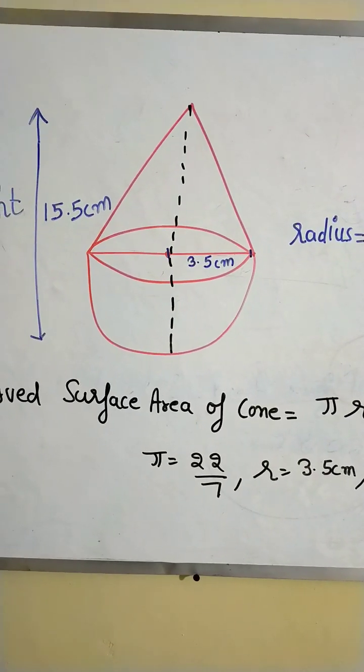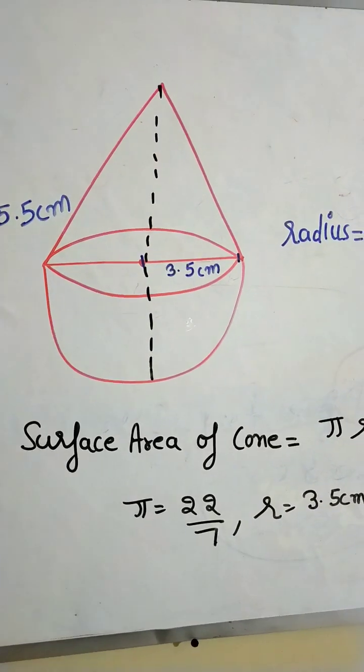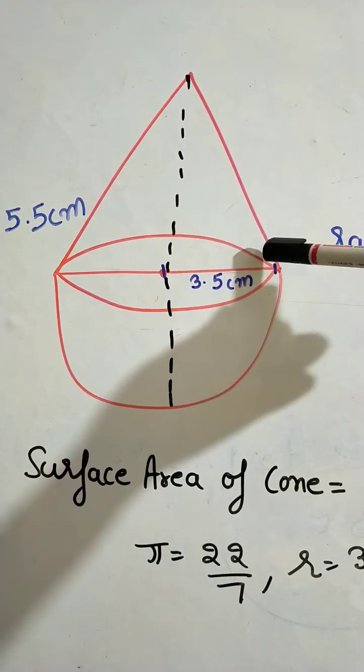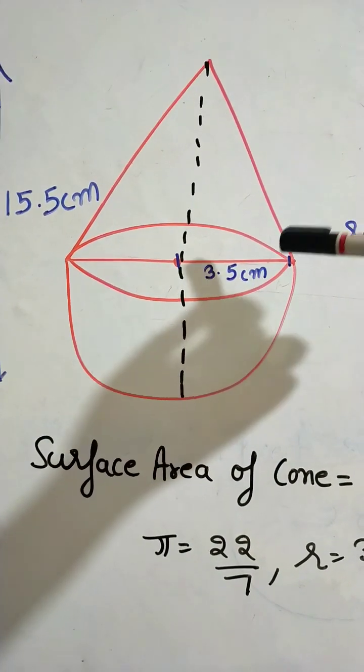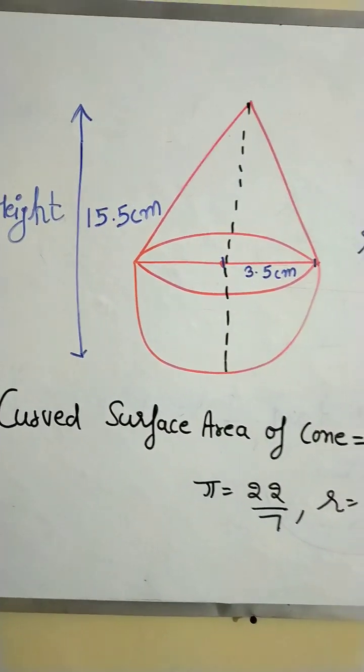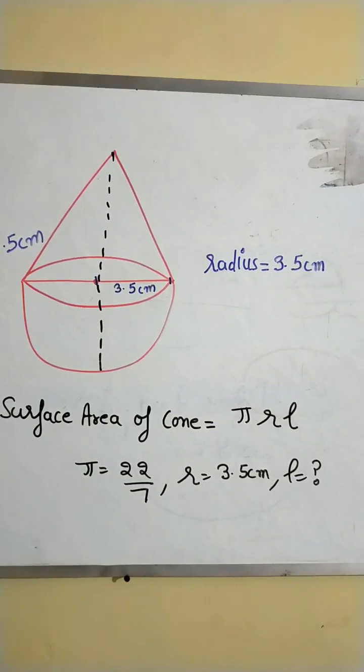First we will find the curved surface area of the cone, then the CSA of the hemisphere. After that we will add them both. First, curved surface area of the cone - the formula is pi r l.